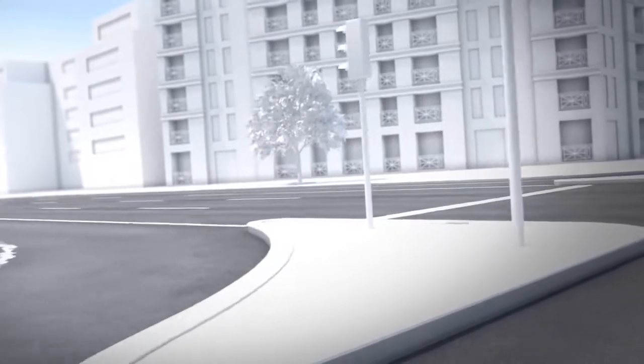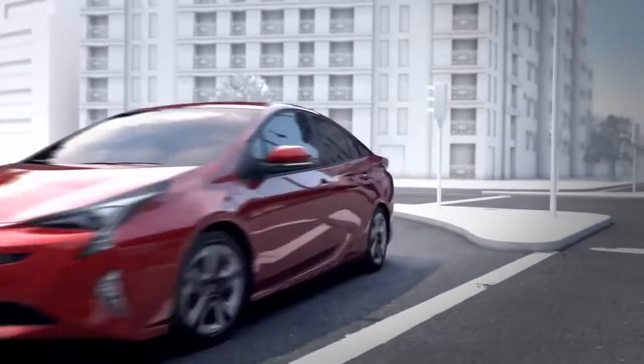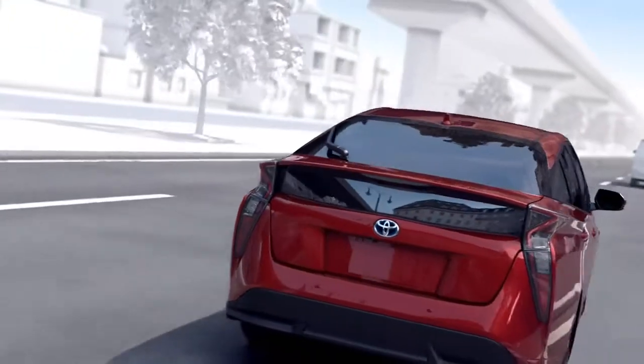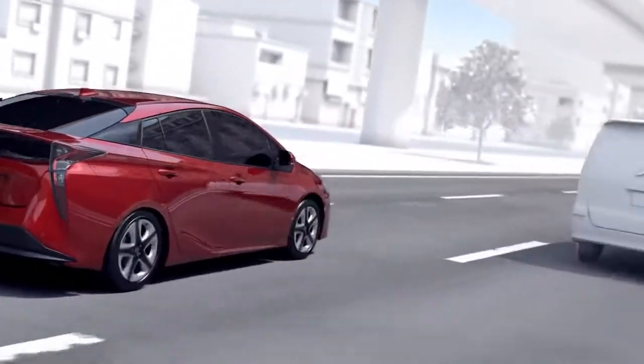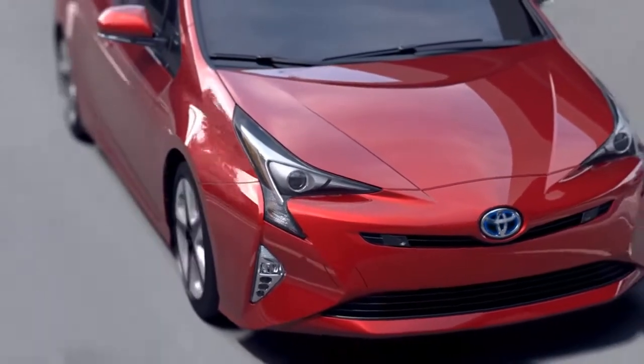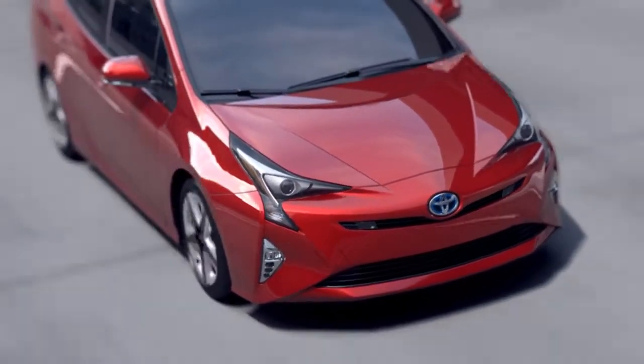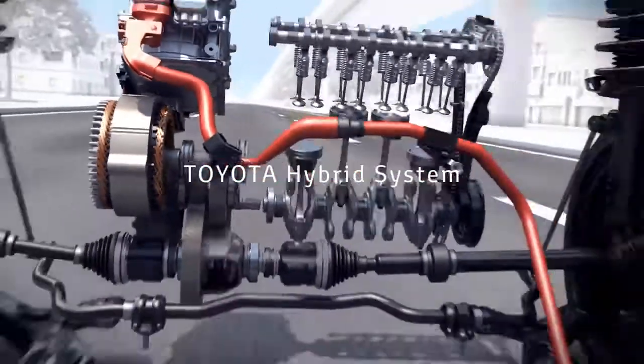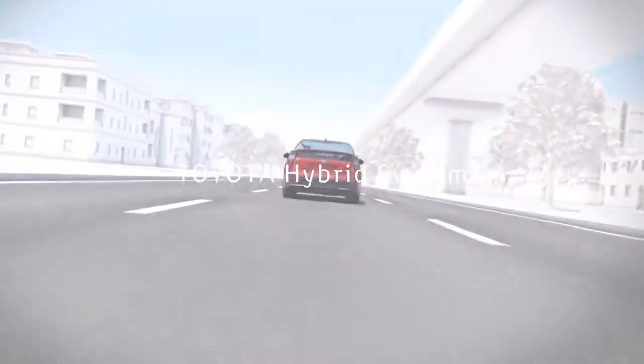In this way, a Toyota hybrid vehicle runs the engine in a rotation range with good efficiency that matches driving conditions, reusing energy that has been wasted until now to achieve low fuel consumption. The Toyota hybrid system is advanced technology that achieves both driving fun and superior environmental performance.